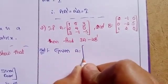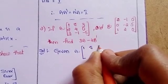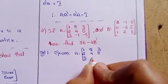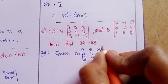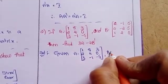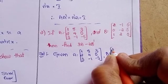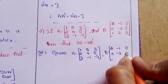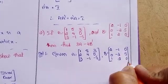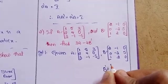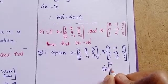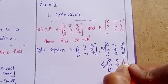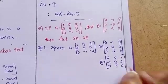Given A equals 1, 5, 3, 2, 4, 0, 3, minus 1, minus 5. B equals 2, minus 1, 0, 0, minus 2, 5, 1, 2, 0. We need B transpose, not B. B transpose has entries 2, 0, 1, minus 1, minus 2, 2, 0, 5, 0.